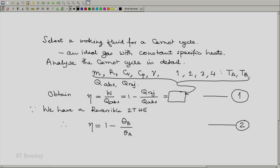Notice that expression 2 will contain only thetas, theta B and theta A, and expression 1 will contain TA and TB and maybe a few other parameters, hopefully hardly any other parameters. And then using these two expressions, expression 1 and expression 2, we will be able to relate theta to T. That is our aim in analyzing the Carnot cycle. Thank you.